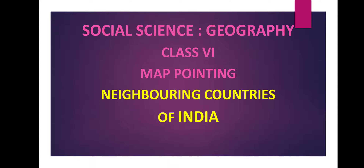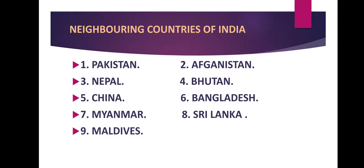Today's new topic is the neighboring countries of India. You can see a list of nine countries that are our neighbors. Some of these countries share a direct land border with our country, while a few others are separated from us through a water body. The neighbors are: Pakistan, Afghanistan, Nepal, Bhutan, China, Bangladesh, Myanmar, Sri Lanka, and Maldives.